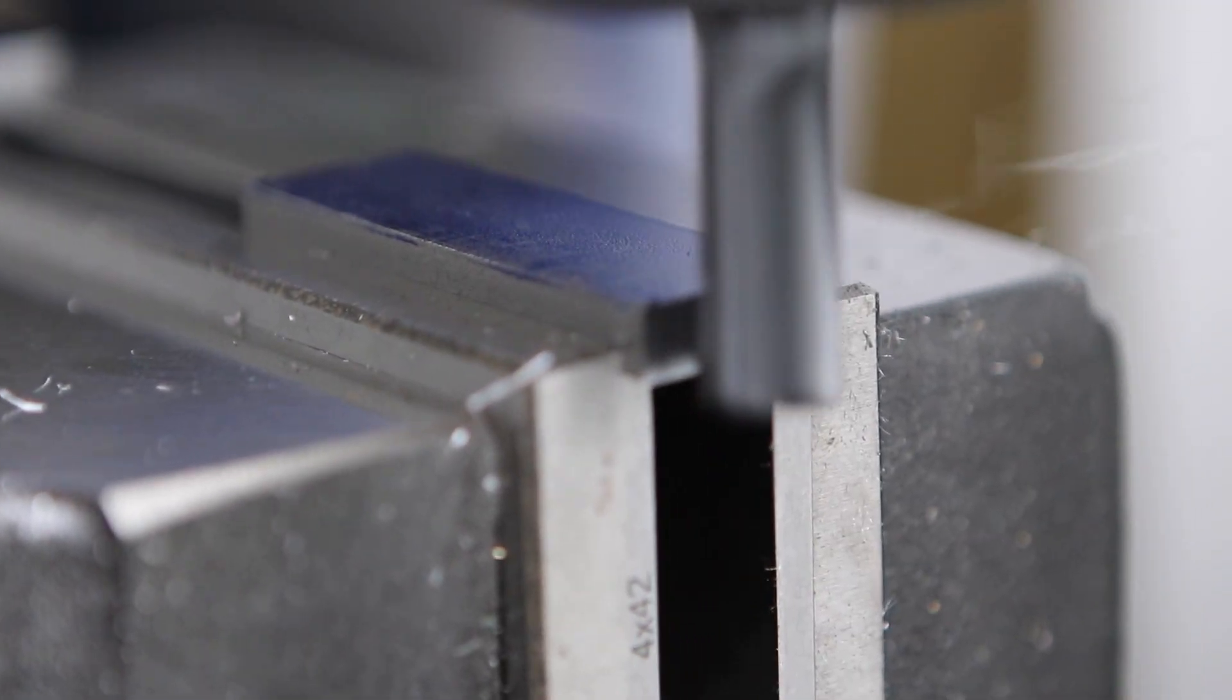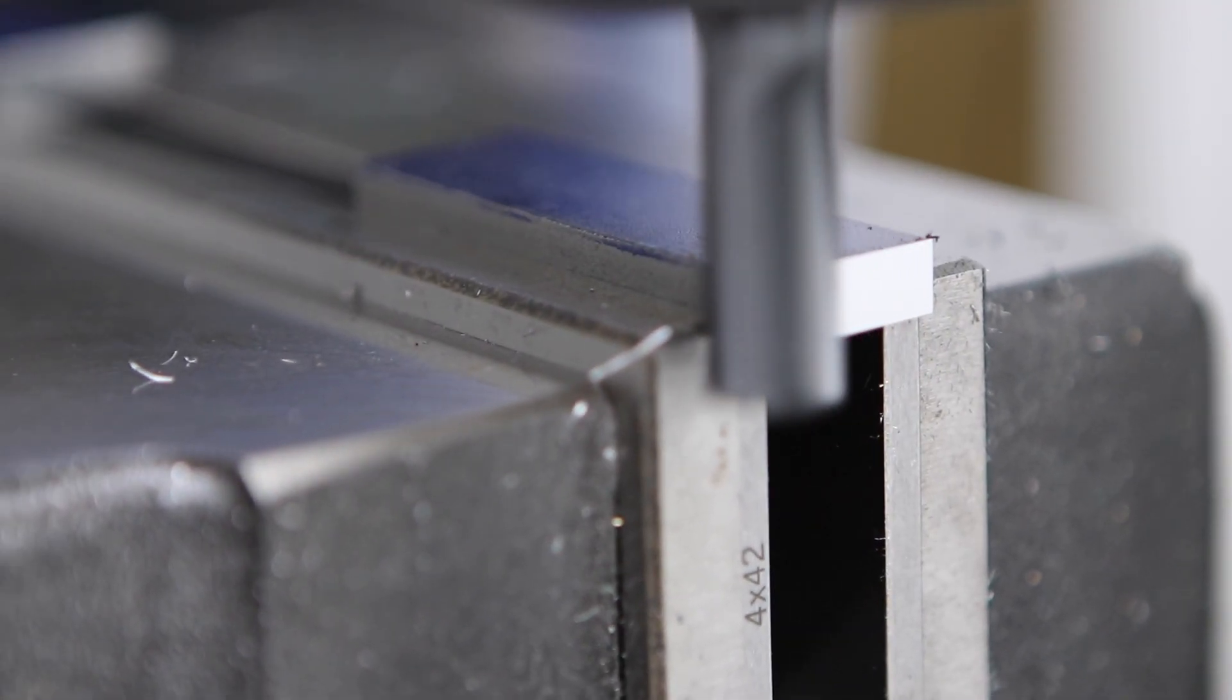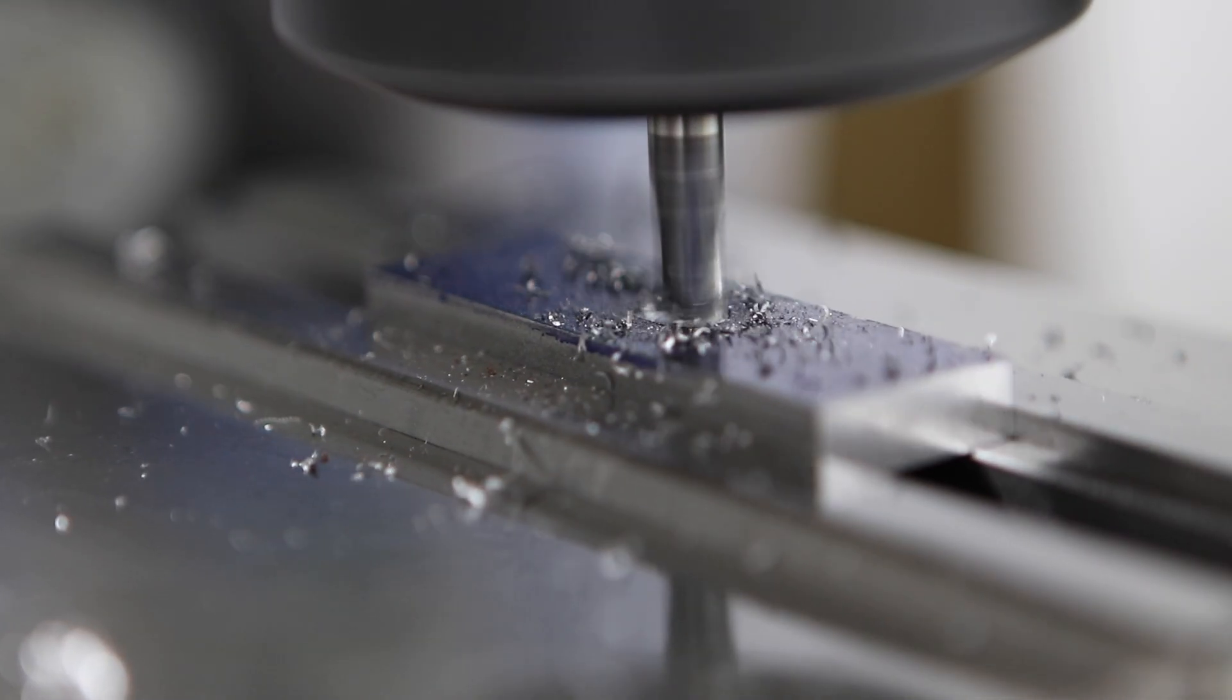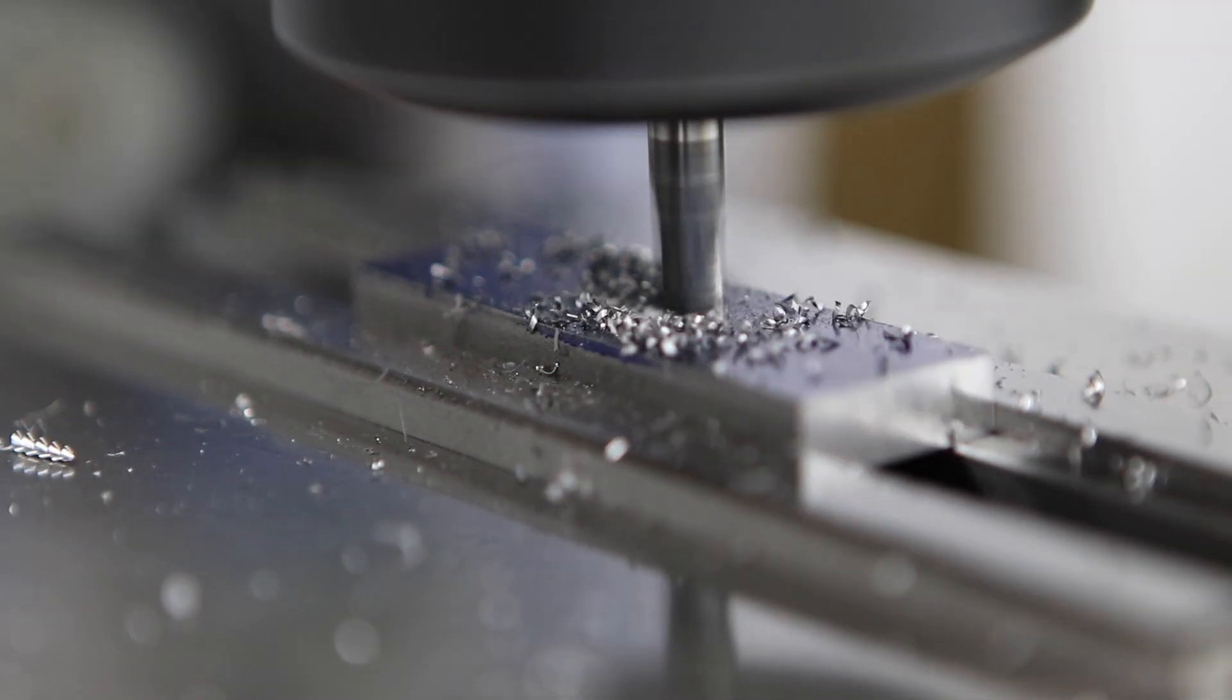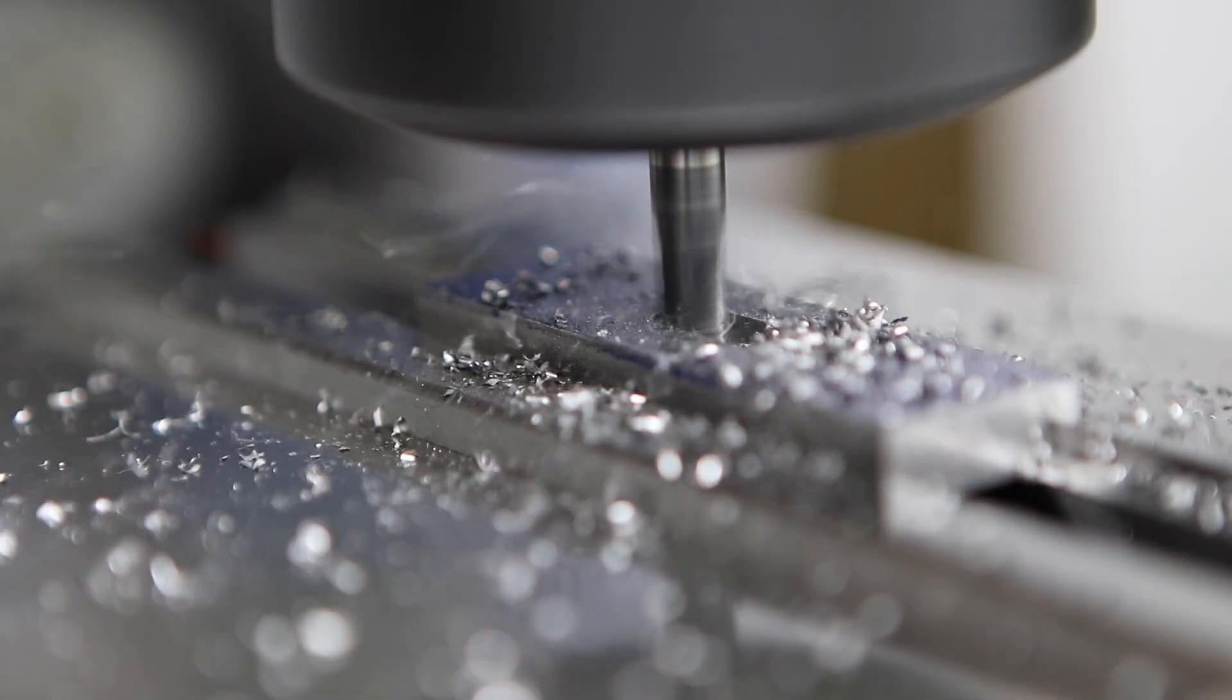Next up we're going to be making the finger so we start off with some mild steel bar stock and we're just cleaning the end up here. The next operation is to mill a six millimeter slot in the middle of the finger. What this does is it accommodates the central post and allows for a little bit of forward and backward adjustment of the finger to allow for different size work pieces to be clamped.